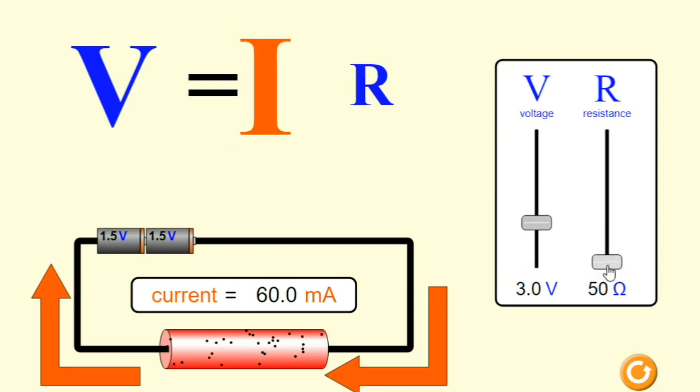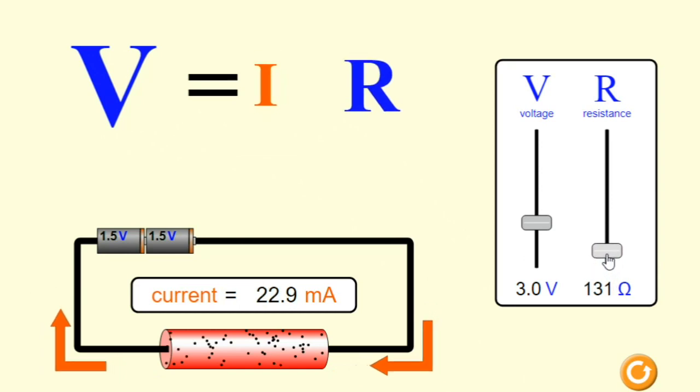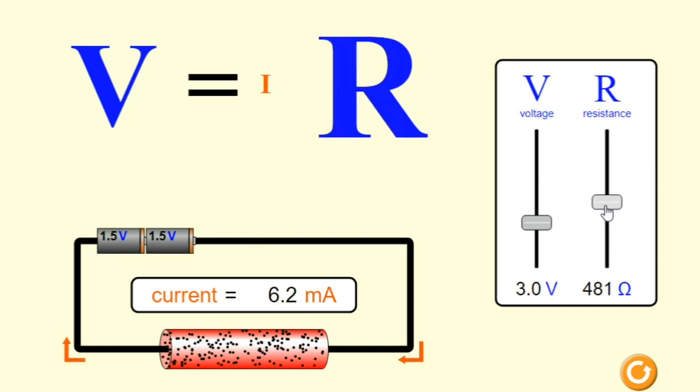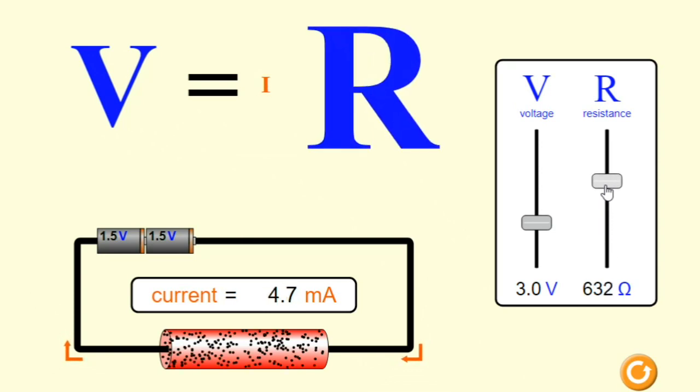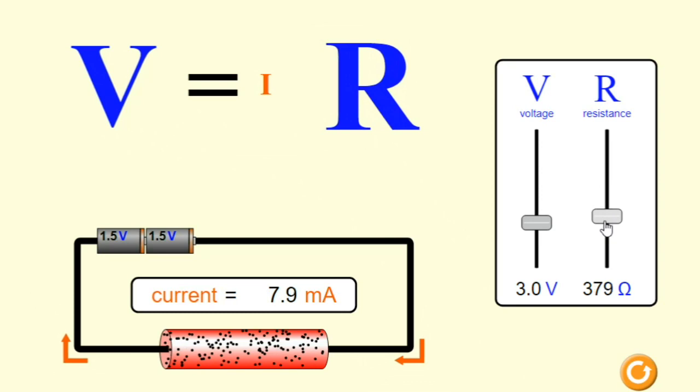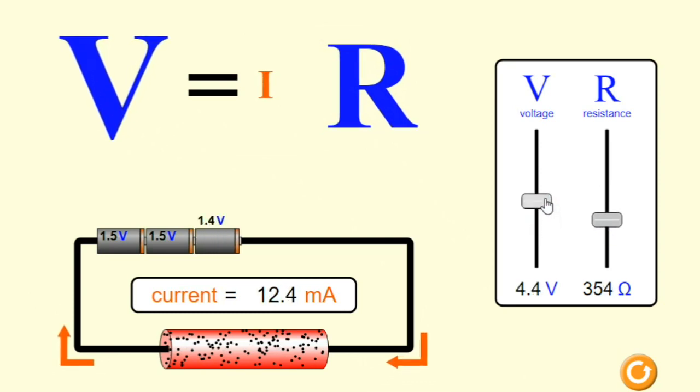If we maintain a constant voltage while increasing R, the current declines. Conversely, decreasing resistance results in an increase in current.